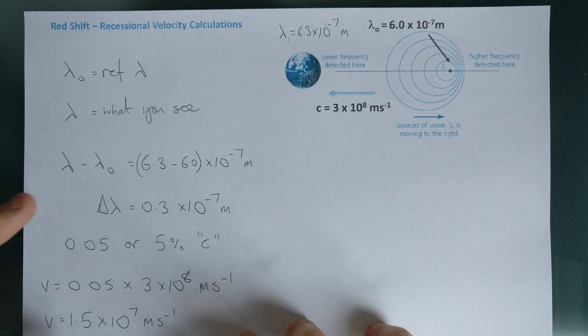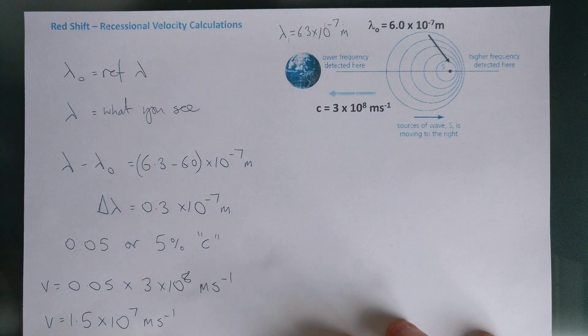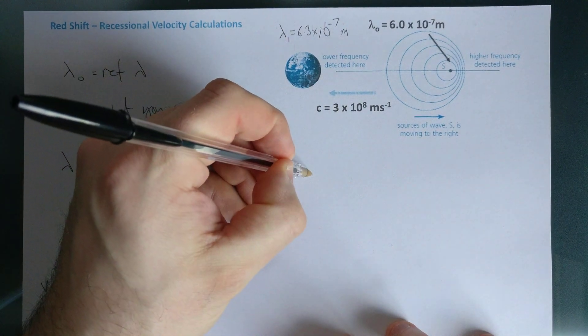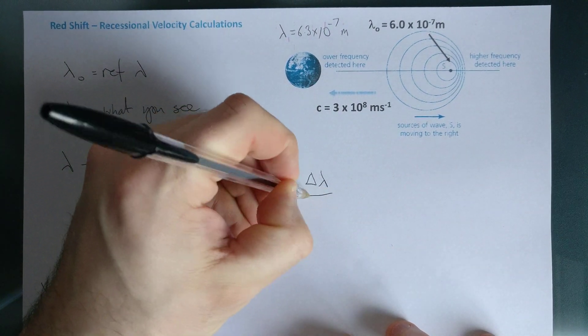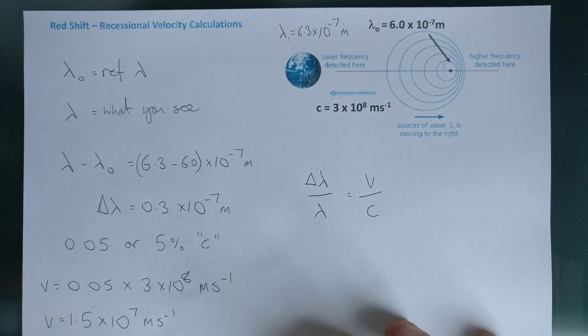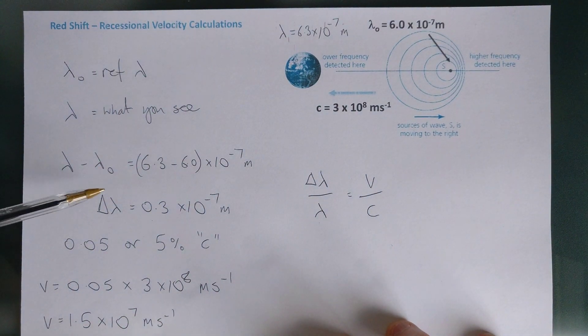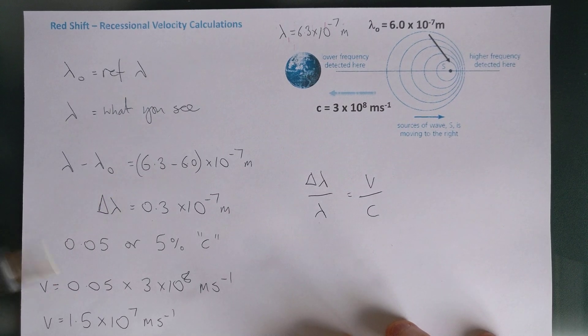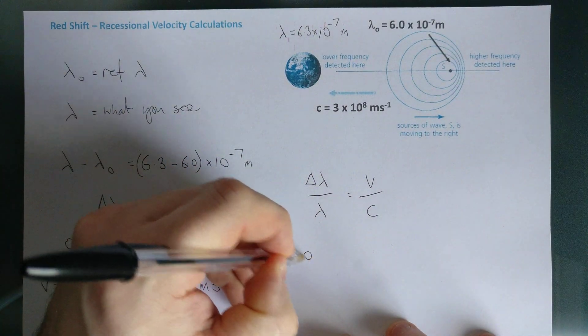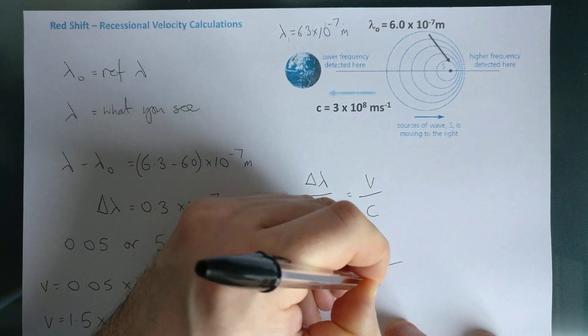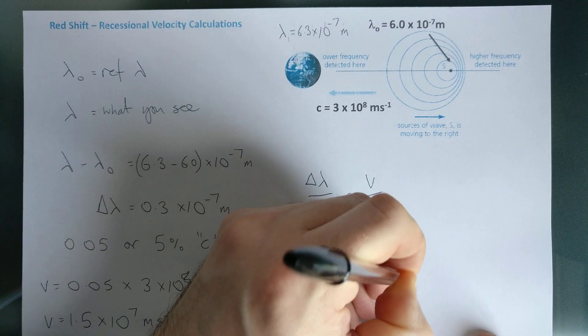Or as an alternative, I could write down slightly different, so I could write my delta lambda over lambda equals v upon c. And of course, if we've done this delta lambda over lambda like that, it comes out at 0.05, and that would equal the v divided by 3 times 10 to the 8 meters per second.